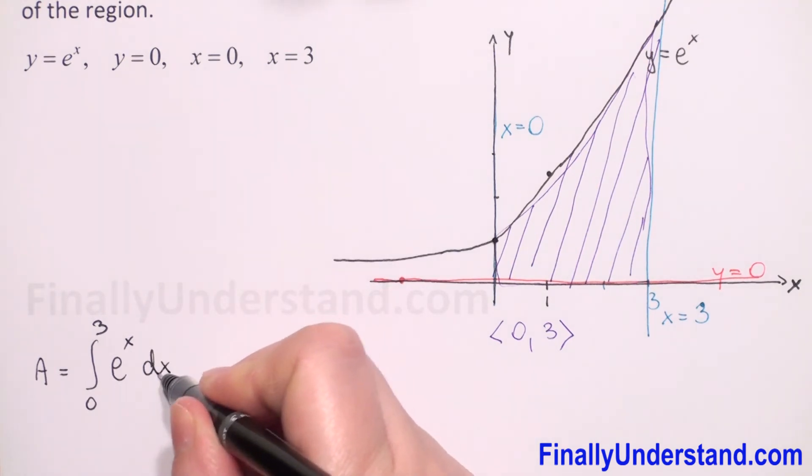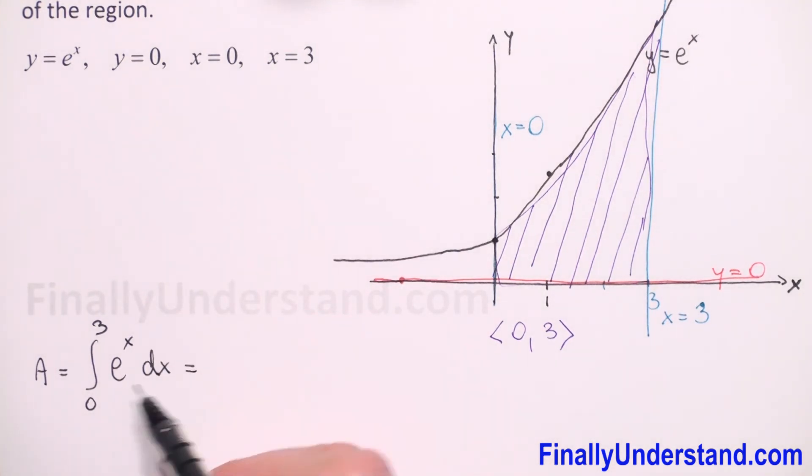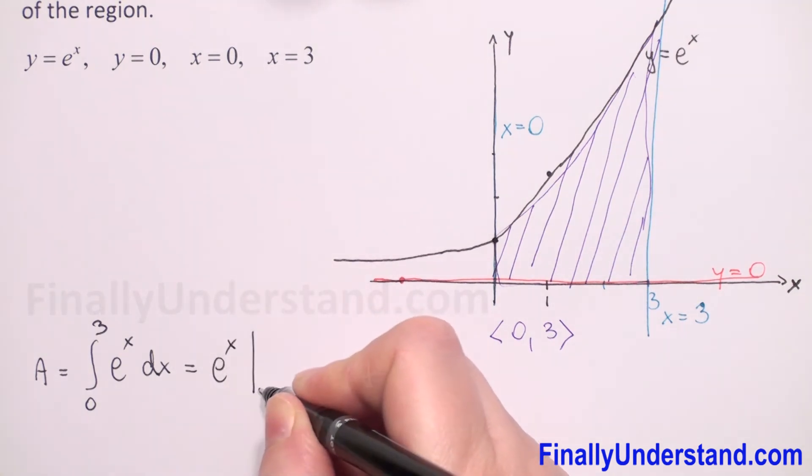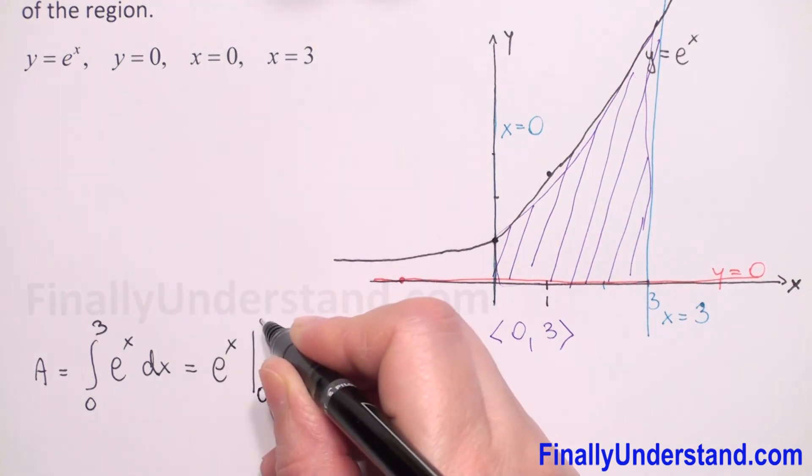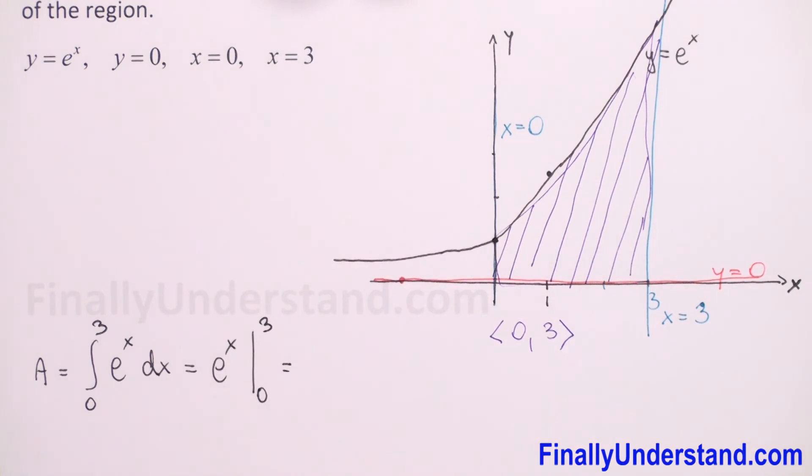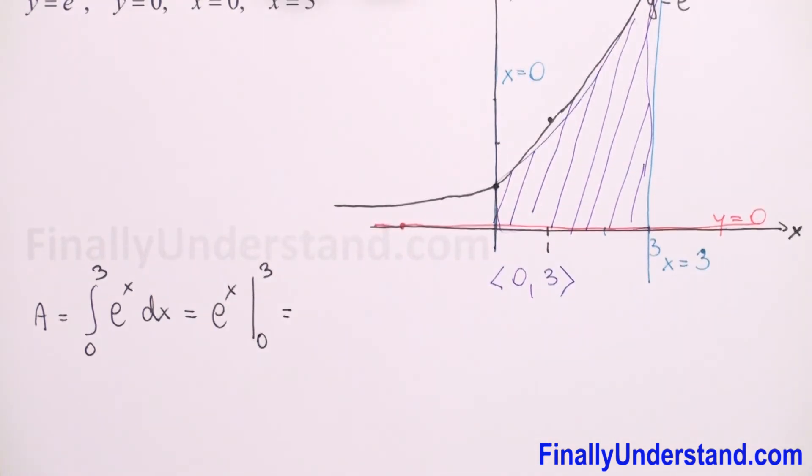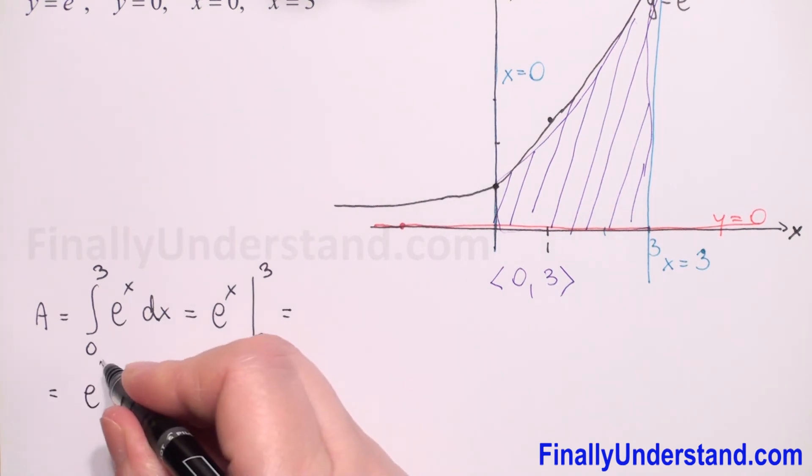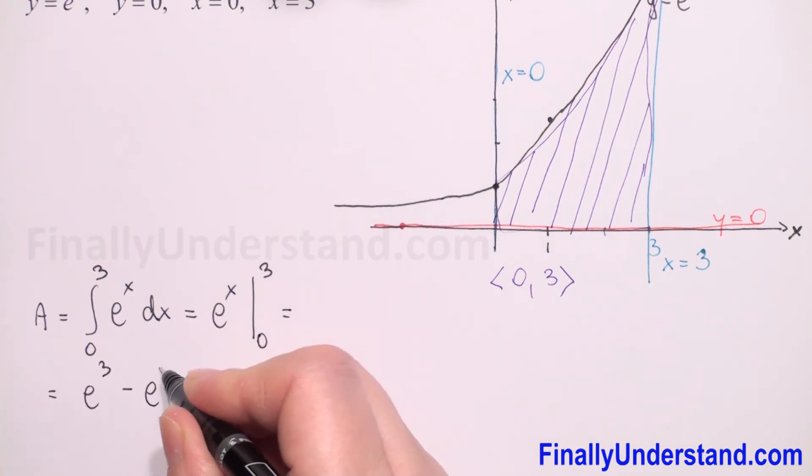So we have integral with respect to x. Integral of e to power x is e to power x, and we have limits of integration from zero to three. So first we have to plug the upper limit, so we have e to power three minus e to power zero.